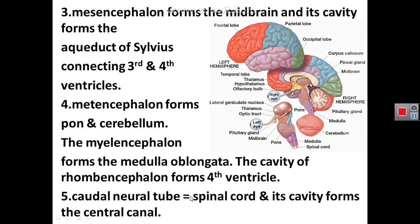Finally, the caudal neural tube forms the spinal cord, which contains a central canal. The cavity of the neural tube forms the central canal of the spinal cord. The lateral ventricles, third ventricle, aqueduct of Sylvius, and fourth ventricle are all derived from the cavity of the brain vesicles, which are originally cavities of the neural tube.